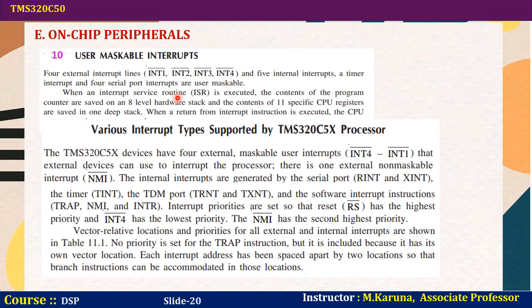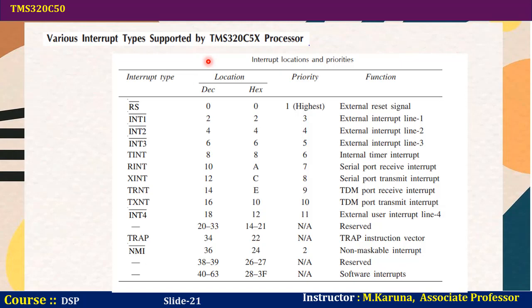The interrupt request, based on interrupt control, causes a jump from the main program to the interrupt service routine (ISR). Before jumping to the ISR, the processor stores all the status of the previously executed program on the stack. When a return-from-interrupt instruction is executed, the CPU register contents are restored. The TMS320C5x supports various interrupt types including external reset (RS), external interrupt lines INT1–INT4, internal timer interrupt, and non-maskable interrupt (NMI), each with different priorities.